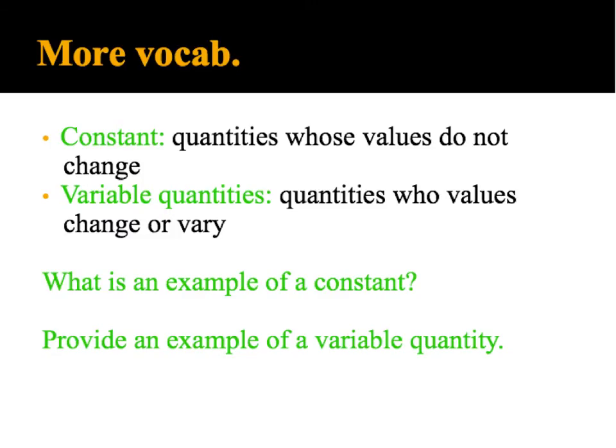A couple more vocab words. A constant is a quantity whose value does not change. So like 4 is a constant because 4 is just 4, it's a quantity that's not changing. A variable quantity is a quantity whose value changes or varies, and usually a variable quantity has a variable. Like 4 times x is going to change depending on what x is.